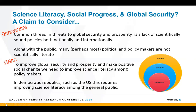Going back to the issue of social change and global security — a common thread in threats to global security and prosperity is a lack of scientifically sound policies, either on a national or international level or both. A corollary to what we saw with science literacy in the United States is that along with the public, many — perhaps most — policymakers are not scientifically literate. To improve global security and prosperity and make positive social change, we need to improve science literacy amongst our policymakers. In democratic republics such as the U.S., this would require improving science literacy amongst the general public.